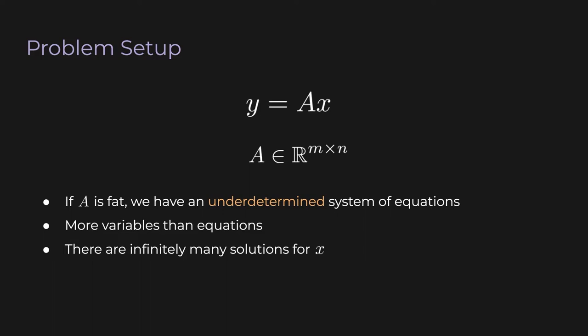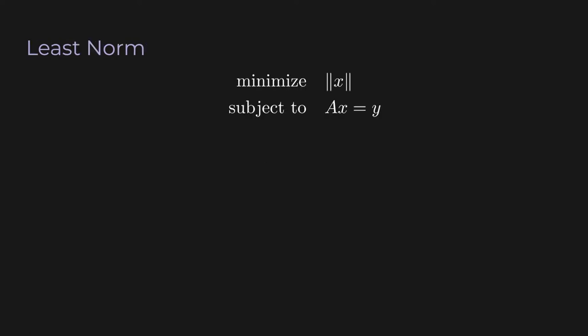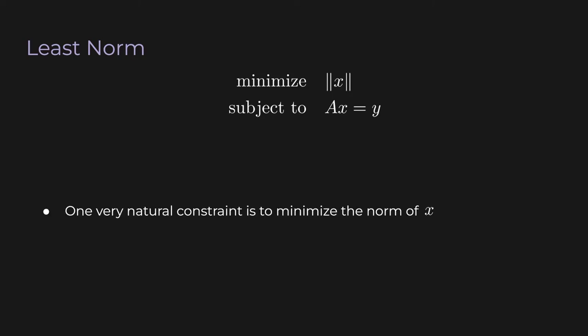In fact, we can find infinitely many x's to solve y equals Ax. So this means we have basically infinite freedom in our choice for x. But we can use that freedom to satisfy some other constraint. So here's where least norm comes in. It turns out a very natural constraint is to minimize the norm of x. We can choose any x to satisfy this equation, but we want to choose the x that has the smallest norm.